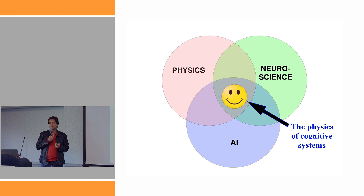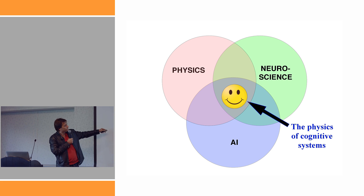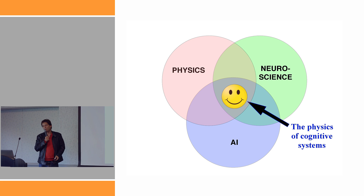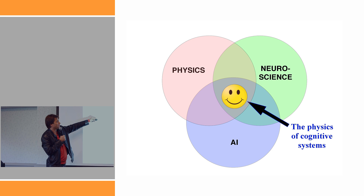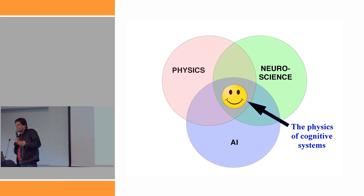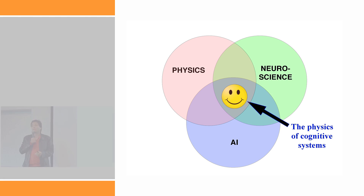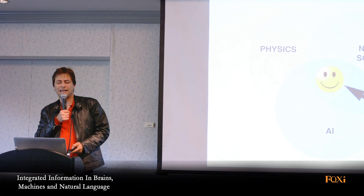Now let me zoom out a little bit from the specific topic of consciousness to the topic of the whole conference - physics of events and observers - and advertise how exciting it is to work at the interface between physics, neuroscience, and AI, which I like to call the physics of cognitive systems. What we've heard about from Giulio and Masafumi sits right here in things to do with consciousness, but I want to say there are also a lot of other very cool problems in this space, often very connected to things you're already working on.